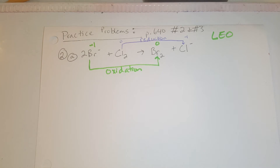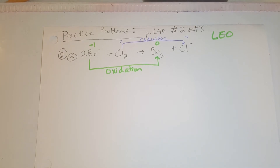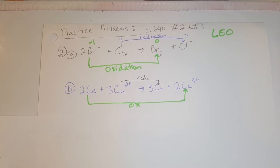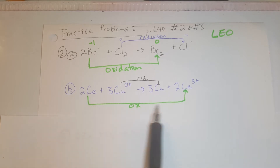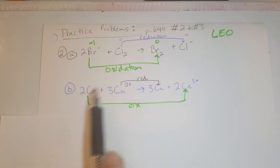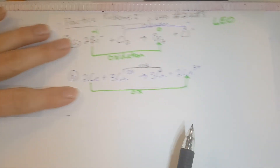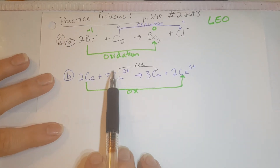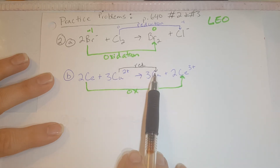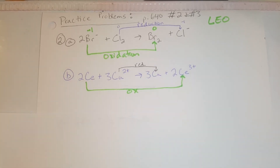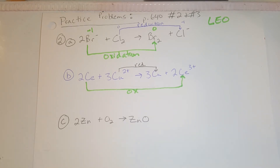Pause the video and try part B on your own. For part B, copper is going from positive two to zero, so it is gaining electrons, which means it undergoes reduction. Part C is talking about zinc and oxygen forming zinc oxide.